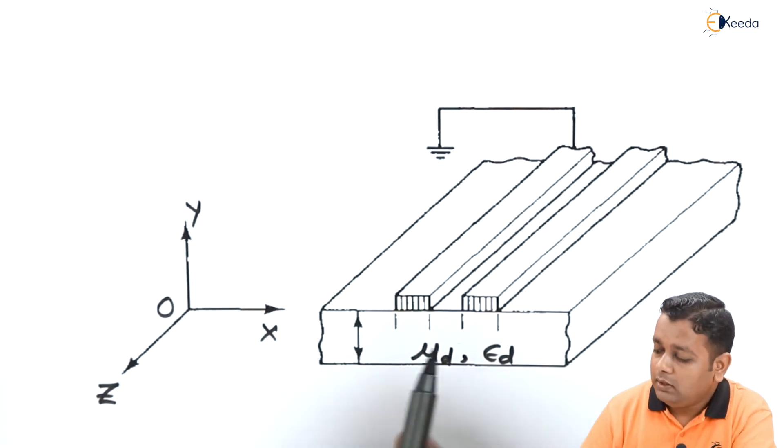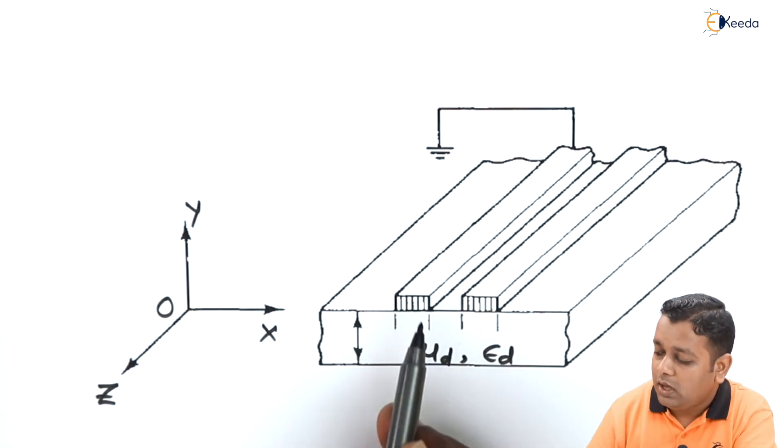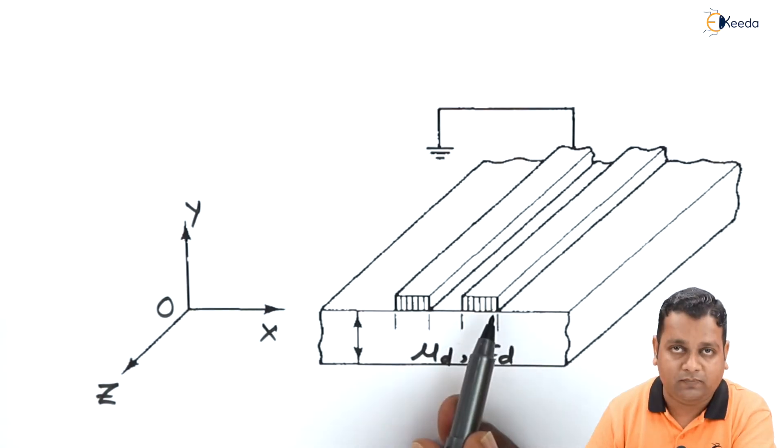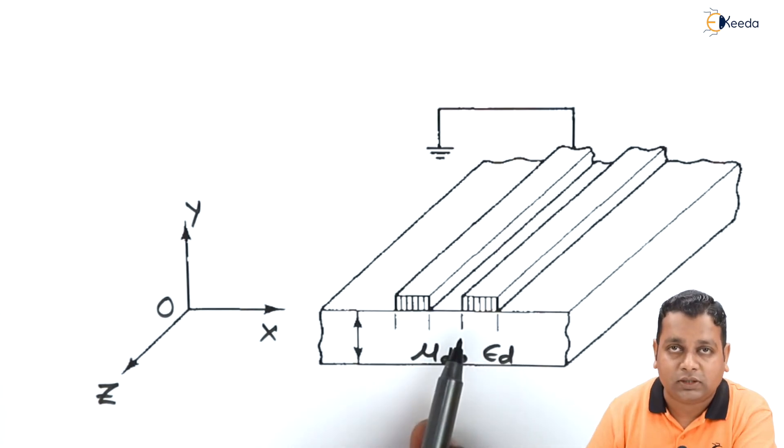Now the change with respect to the previous type of views for the microstrip line is that we have two strip conductors here. So both are mounted onto the dielectric substrate.